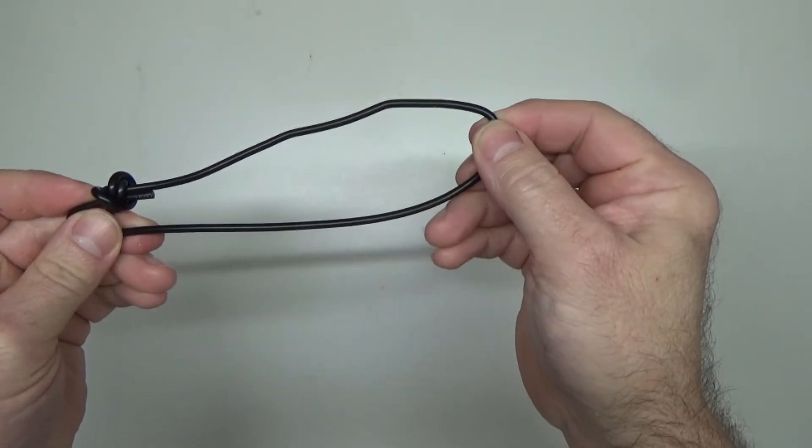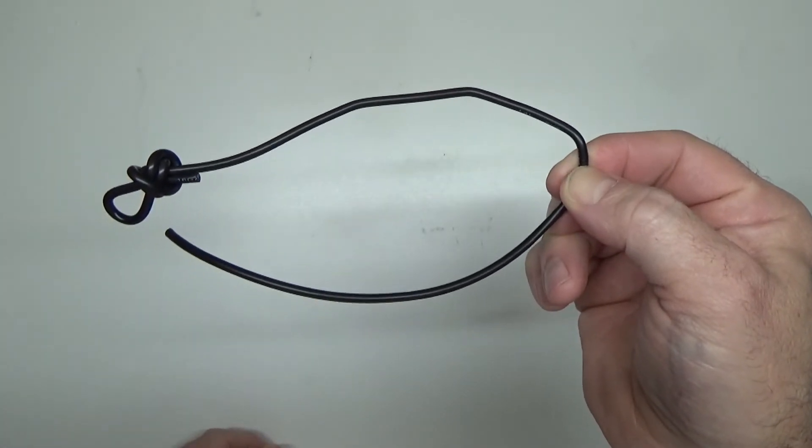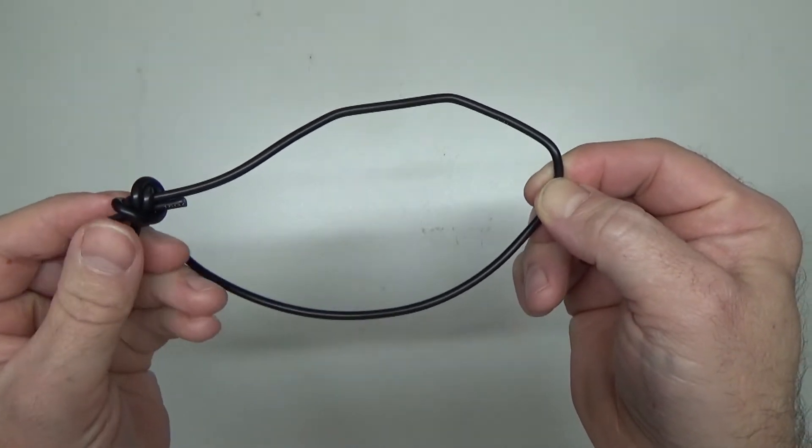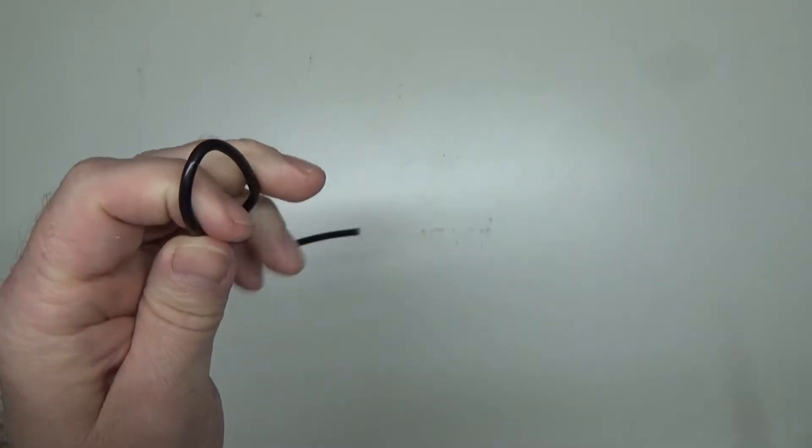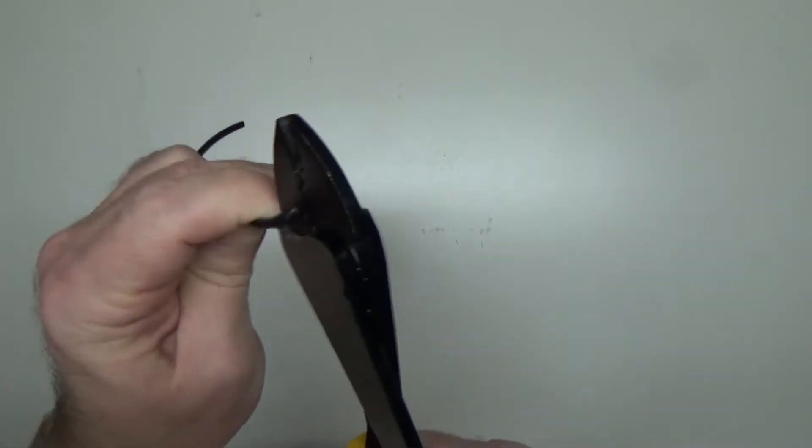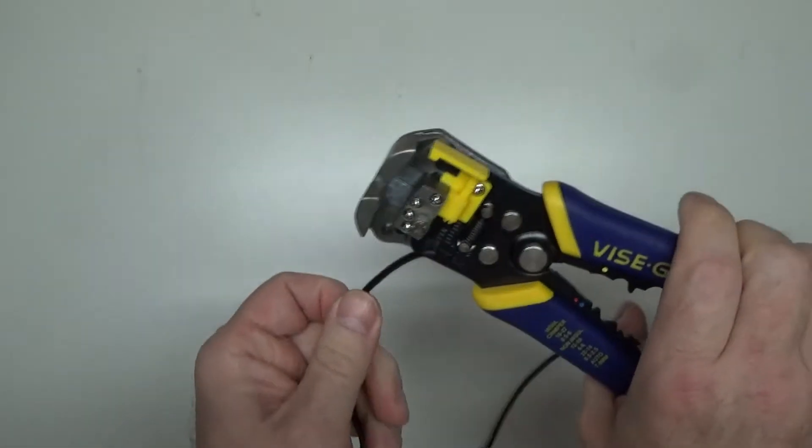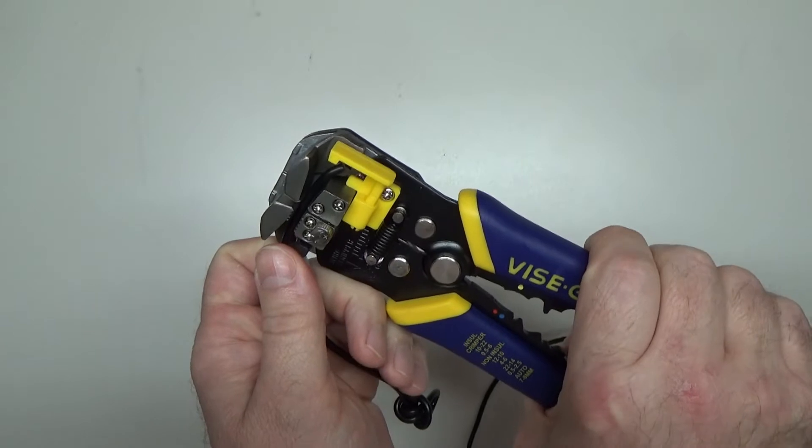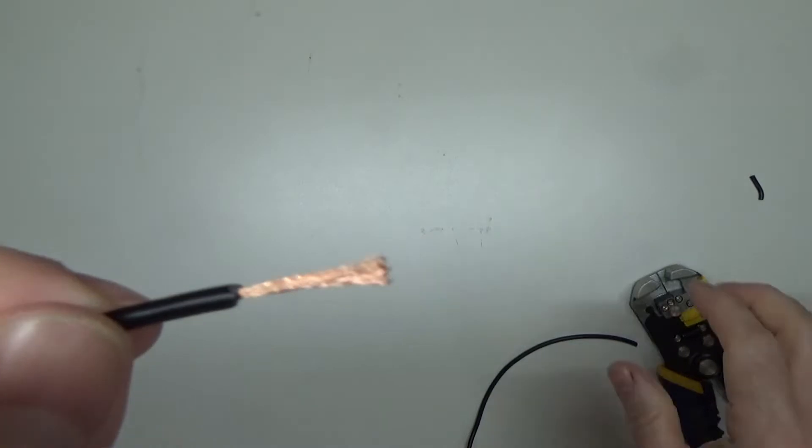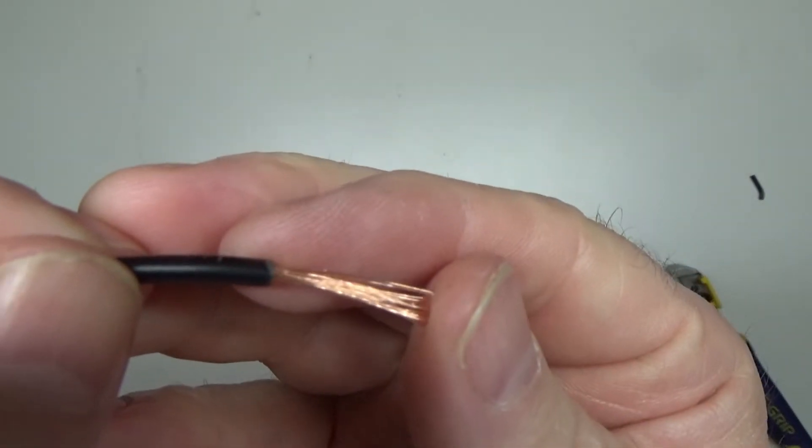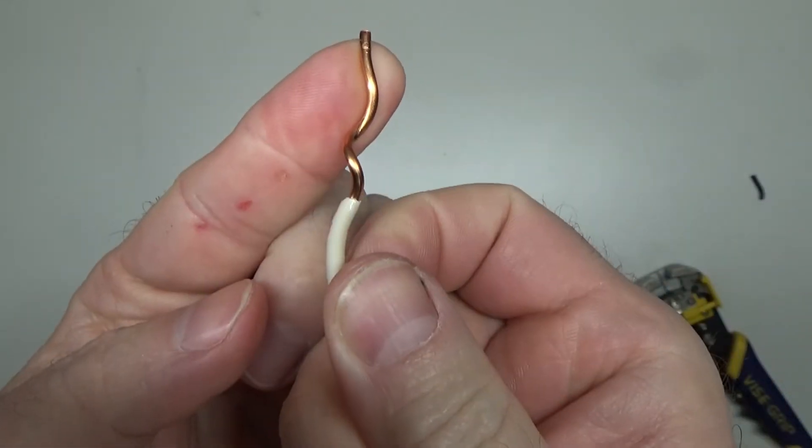For our first blast, I'm going to demonstrate using a piece of 16 gauge primary wire. This wire is pretty common to be used in automotive applications for stereo installs, lighting, whatever the case may be. This is stranded wire. Cut that there, strip it, only got two inches so we'll go up here like this.